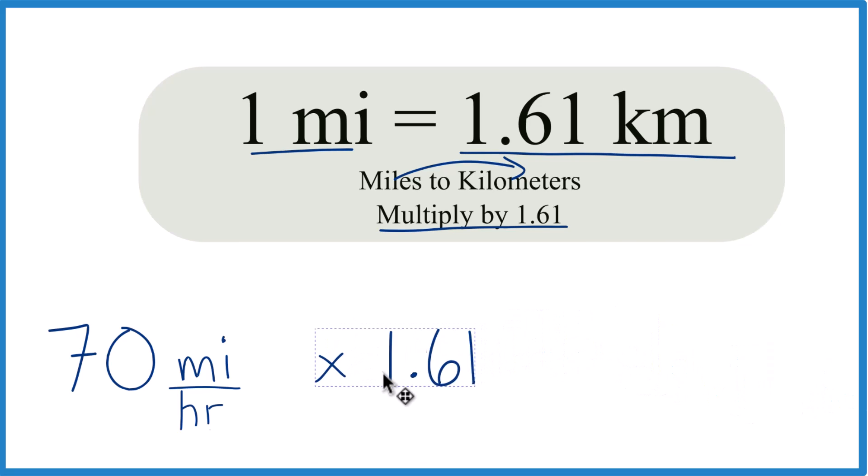So we take 70 MPH, we multiply that by 1.61, and that'll convert it to kilometers per hour.